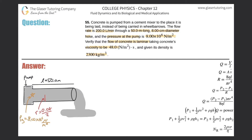This problem is fairly straightforward. It seems like there's a lot of information here, but we don't actually need all this extraneous information. The reason is because they gave us the flow rate. Once they give us the flow rate, all of the other information — the 50 meter long pipe, the 8 centimeter diameter, the pressure at the pump — all of it is irrelevant.